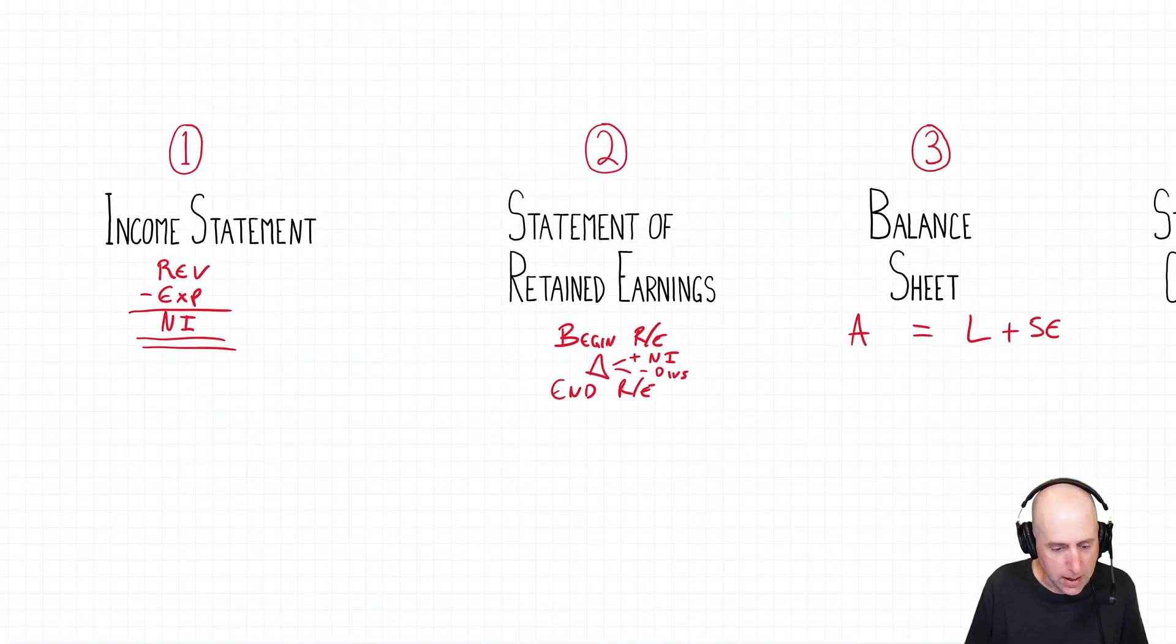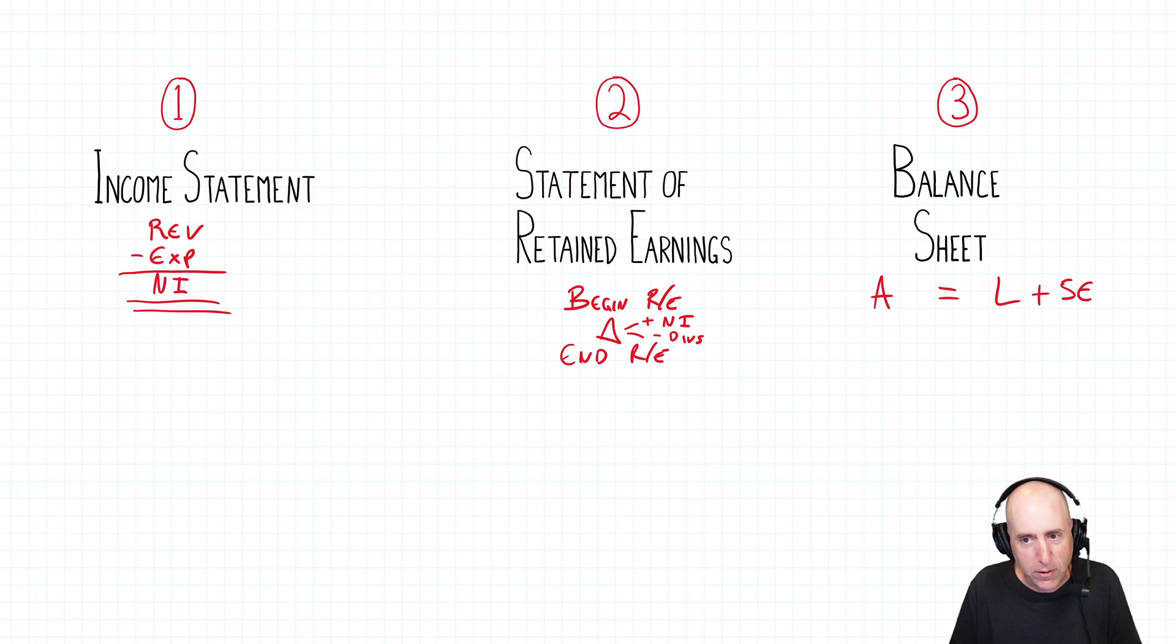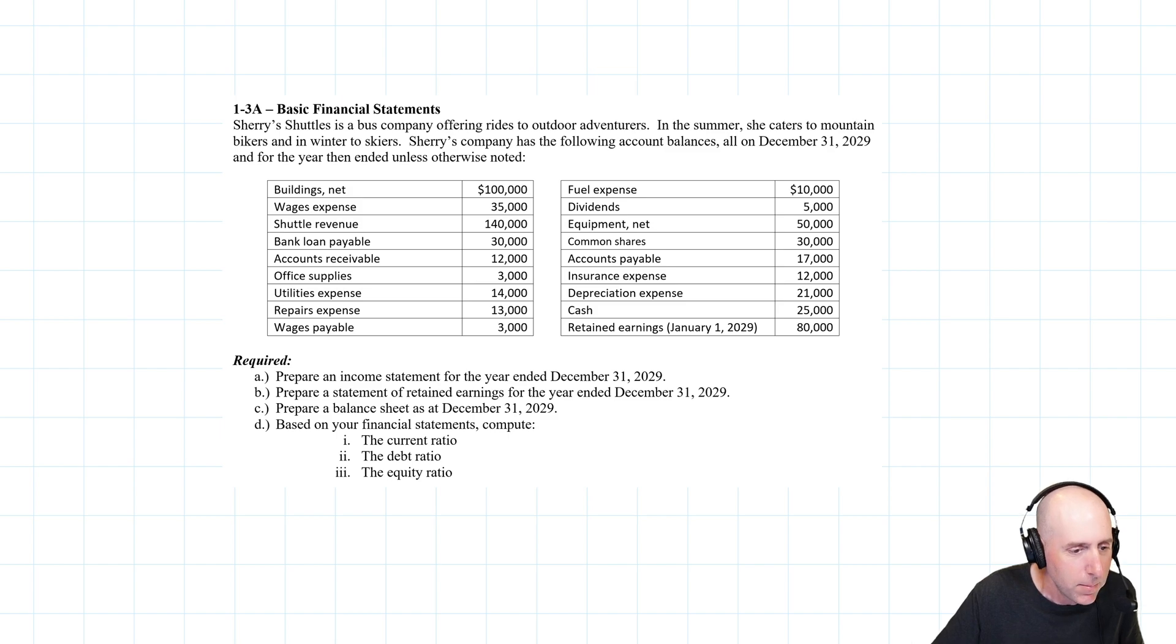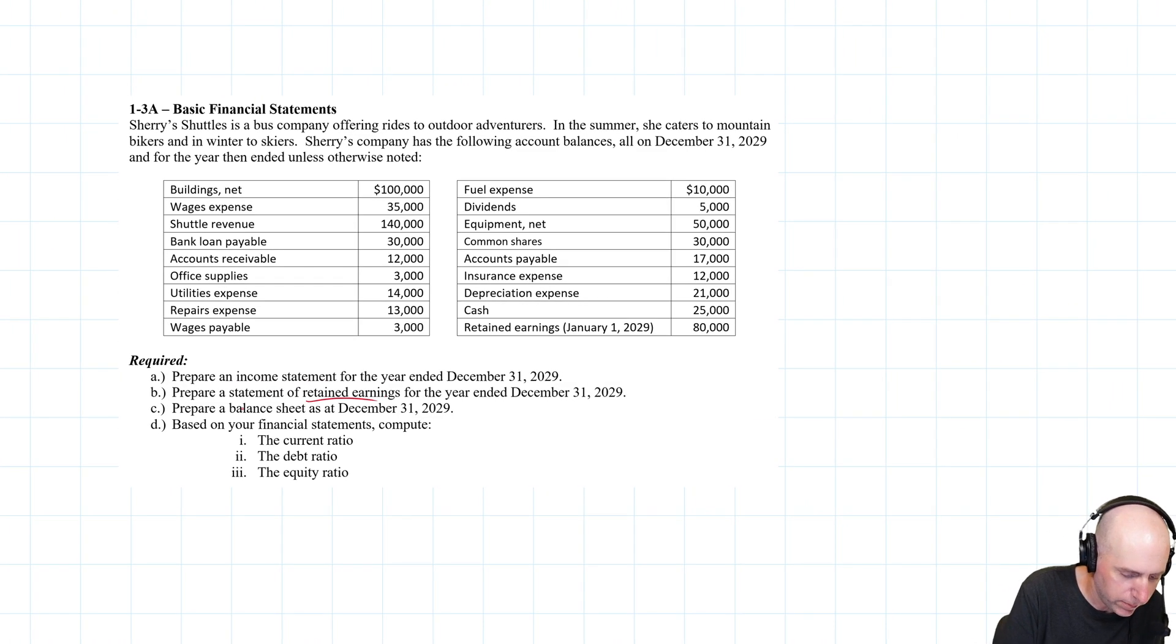So in this video, we're going to do the income statement, but in this series of videos, we'll do the income statement, the statement of retained earnings and the balance sheet. So let's jump in and prepare our income statement. Well, let's read the problem. So again, download the problem from tonybell.com, but let's read the problem and see what we're up against. 1-3-A. Sherry Shuttles is a bus company offering rides to outdoor adventurers. In the summer, she caters to mountain bikers and in winter to skiers. Sherry's company has the following account balances all on December 31st, 2029, and for the year that ended unless otherwise noted, and there's a big long list of accounts. It says, make me an income statement. That's what we're going to do in this part of the video. We'll do an income statement in this part of the video. In part two, a statement of retained earnings. And in part three, we'll do parts C and D here, the balance sheet and the ratio. So that's the game plan here.